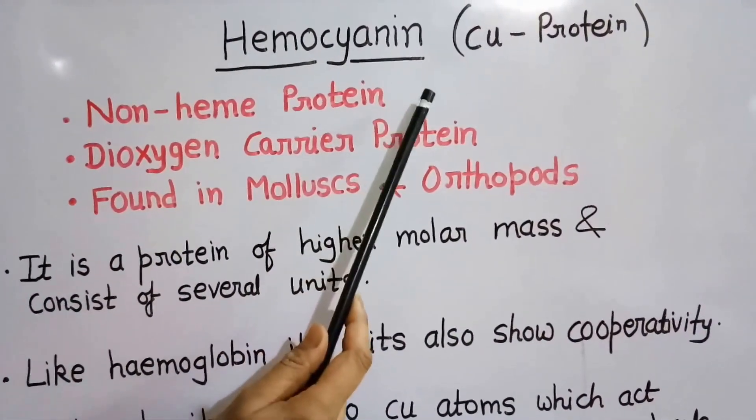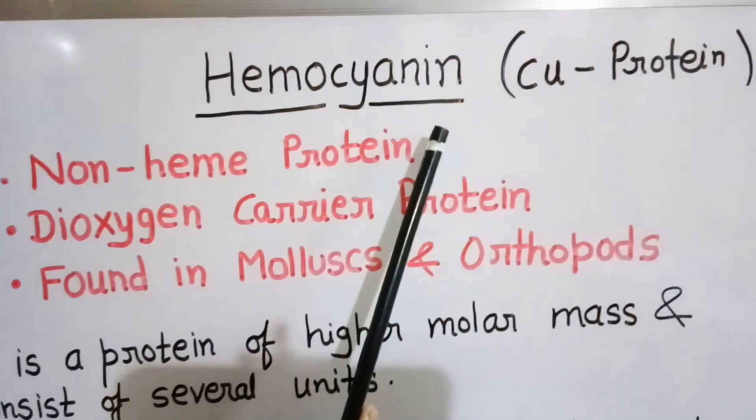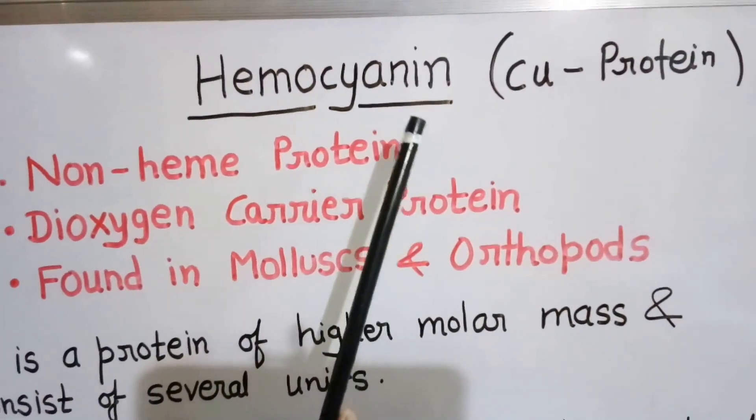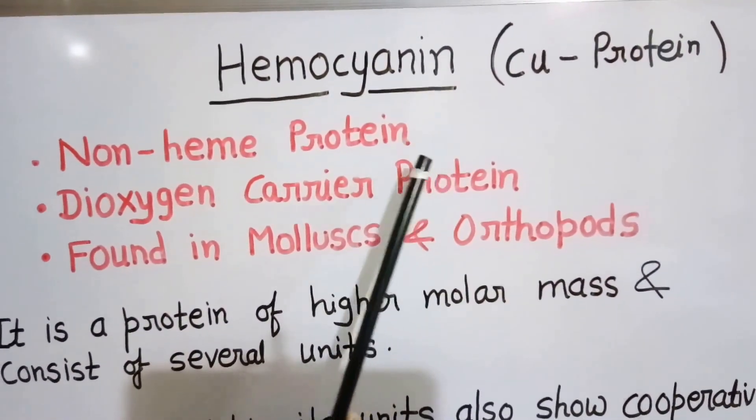It is a copper protein, meaning the active center is a copper atom, not an iron atom. This is the most important point about hemocyanin: the active center is copper.